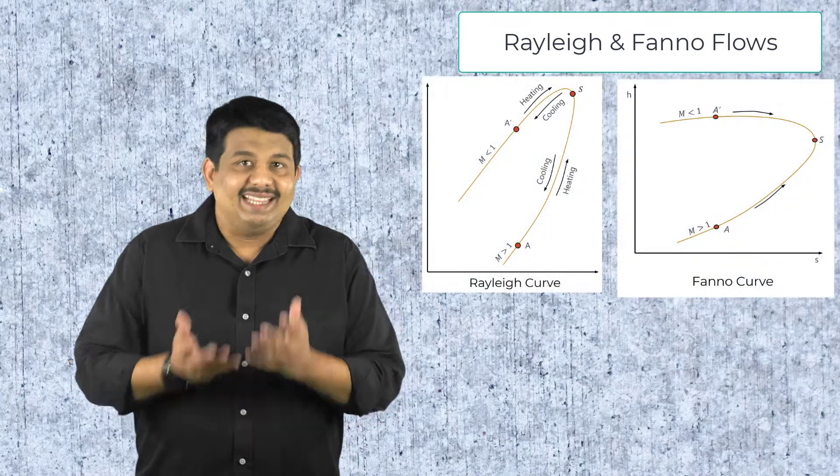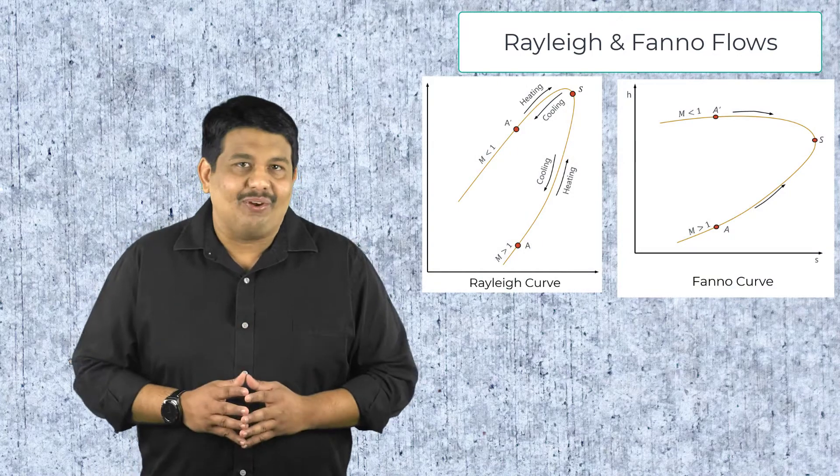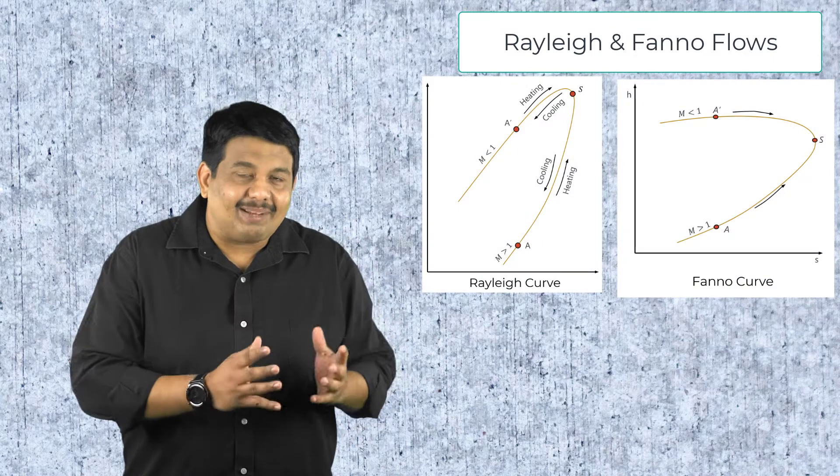In this course, we first explored 1D flows with heat addition and frictional effects, which are known as Rayleigh and Fanno flows respectively. We saw that the heat addition and friction always drive the Mach numbers towards 1, i.e., they decelerate a supersonic flow and accelerate a subsonic flow.